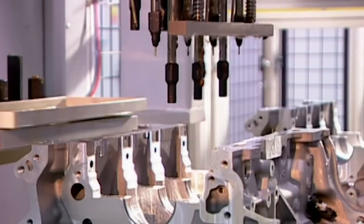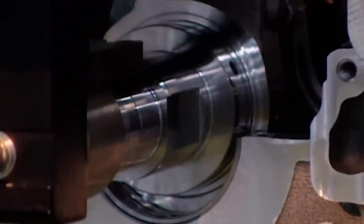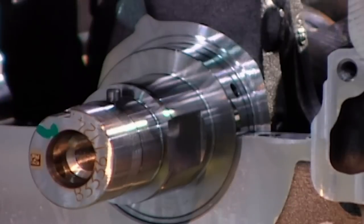Back on the engine assembly line, the engine blocks are still upside down. A robot lubricates the four bearings on which the crankshaft will turn. Then it drops the crankshaft into position.